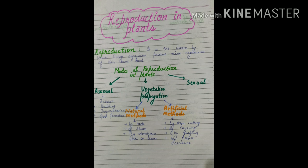We have now studied the various modes of reproduction in plants. In the previous video, we studied the asexual means by which plants may develop, including fission, budding, fragmentation, and spore formation. In this video, we studied vegetative propagation by both artificial and natural methods. The natural method is possible by roots, by stem, and by adventitious buds. The artificial method includes stem cutting, layering, grafting, and tissue culture.